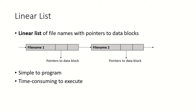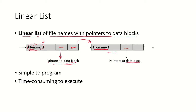If we use a linear list for implementing the directory, we create a list of file names with pointers to the data blocks. The file name is there and along with it there will be a pointer pointing to the data block — that means where the data is kept. If this list is implemented as a linked list, we can have different nodes with the file name, a pointer to its data block, and a pointer to the next node in the list.